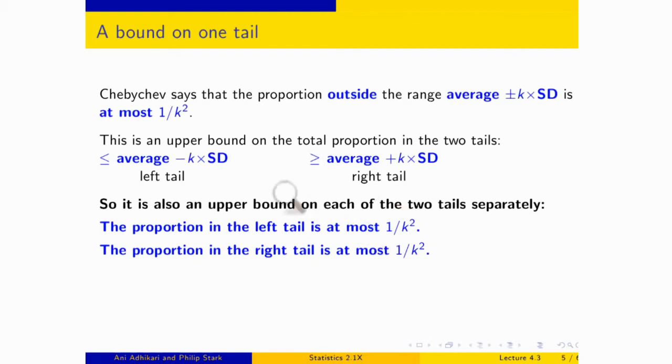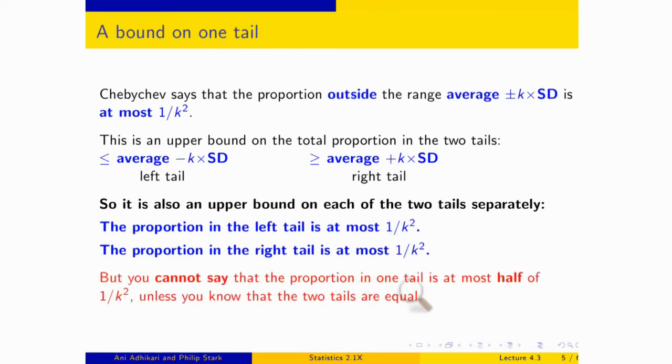Let me just check something. Did you want to halve it? If these two together are at most 10%, do you want to say, do you desperately want to say that one of these then is at most 5%? Eh, not really. Because you don't know that these two tails are equal. You don't know that the proportions are equal because you don't know anything about the symmetry of the histogram. So in general, you cannot say that the proportion in a single tail is bounded by half of what Chebyshev says for the total of two tails. You need a bit of symmetry for that. You need to know that the two tails are equal. So in general, you don't know that. And in general, you cannot halve the bound.